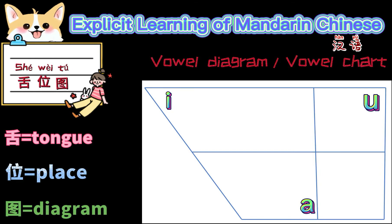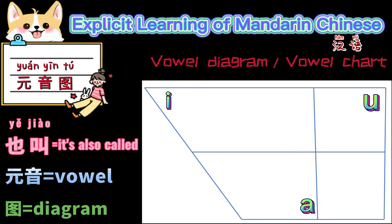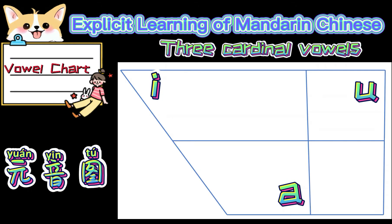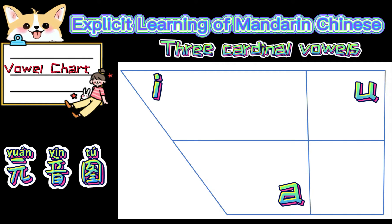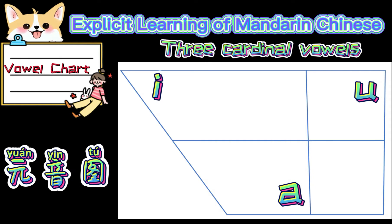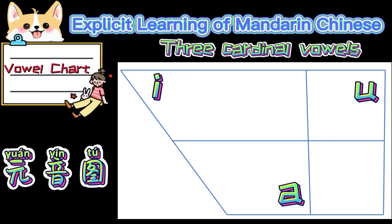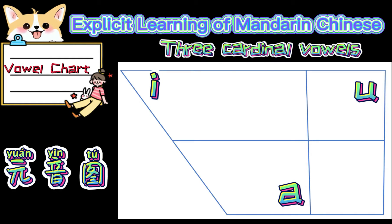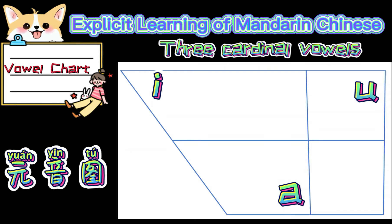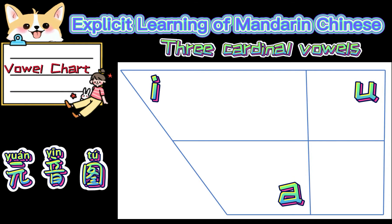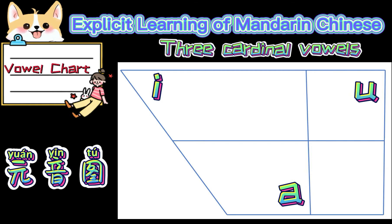Today we'll see the Mandarin Chinese vowel chart. The vowel chart is also called the original sound diagram. First, let's see the vowel chart. As we know, 'i', 'u', and 'a' are three cardinal vowels which can be found in all human languages. We see the three cardinal vowels in this vowel chart. To teach or learn a foreign language, it's very important to know how to read phonetic symbols in a vowel chart.